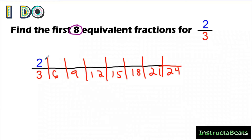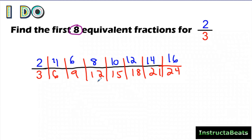Now my numerator is two, so I'm going to skip count by two: two, four, six, eight, ten, twelve, fourteen, sixteen. So I've just made a list of eight equivalent fractions really quickly just by using addition. Two-thirds is the same thing as four-sixths, six-ninths, eight-twelfths, ten-fifteenths, twelve-eighteenths, fourteen over twenty-one, and sixteen twenty-fourths. And if you notice, repeated addition is multiplication: two-thirds times two over two was four-sixths, two-thirds times three over three was six-ninths, two-thirds times eight over eight was sixteen twenty-fourths. I'm just making it simple and using addition.